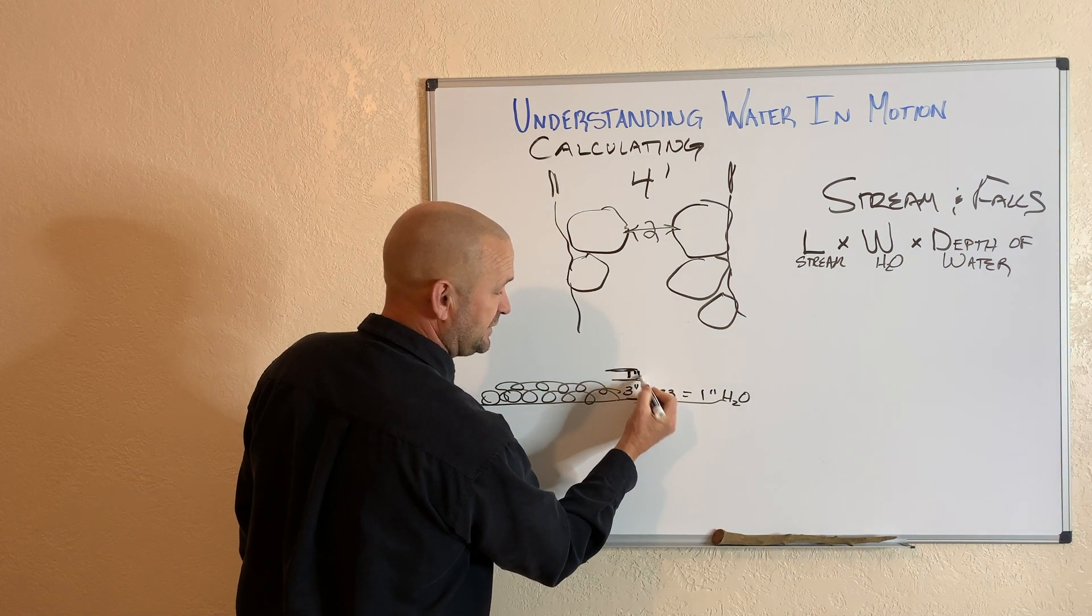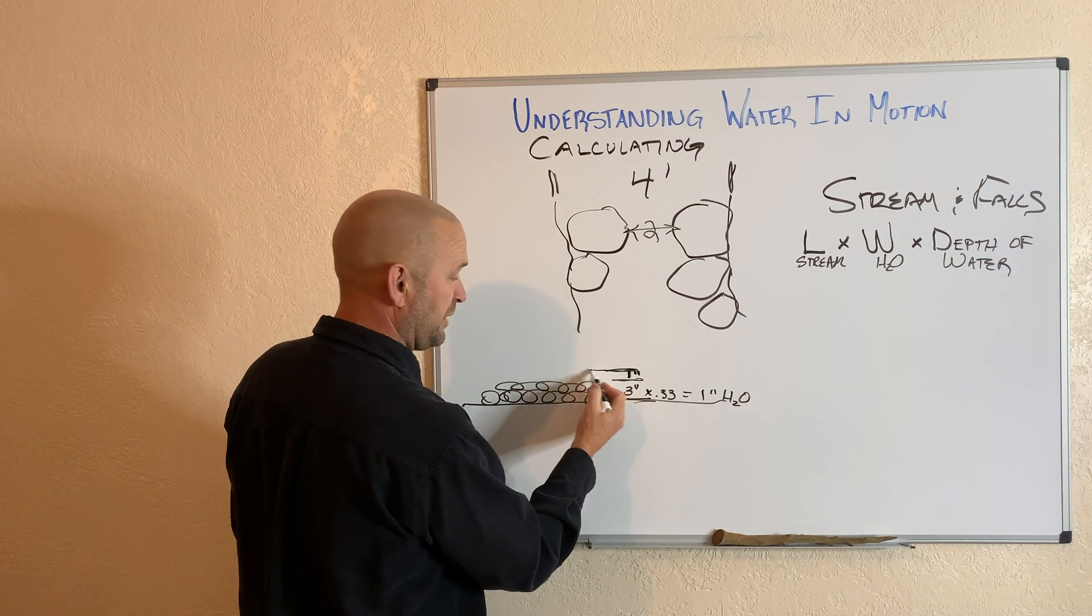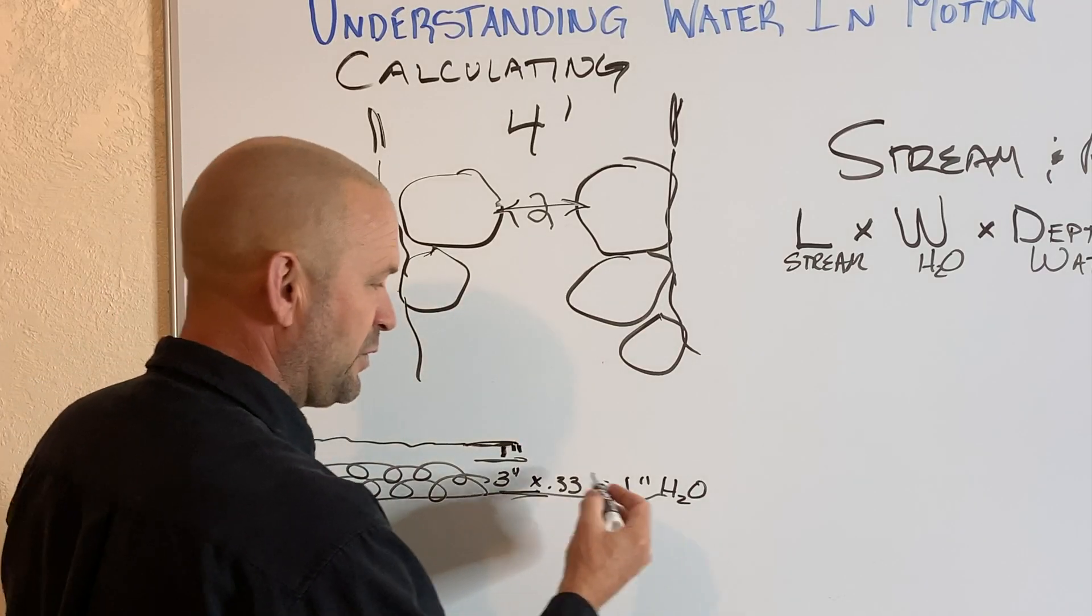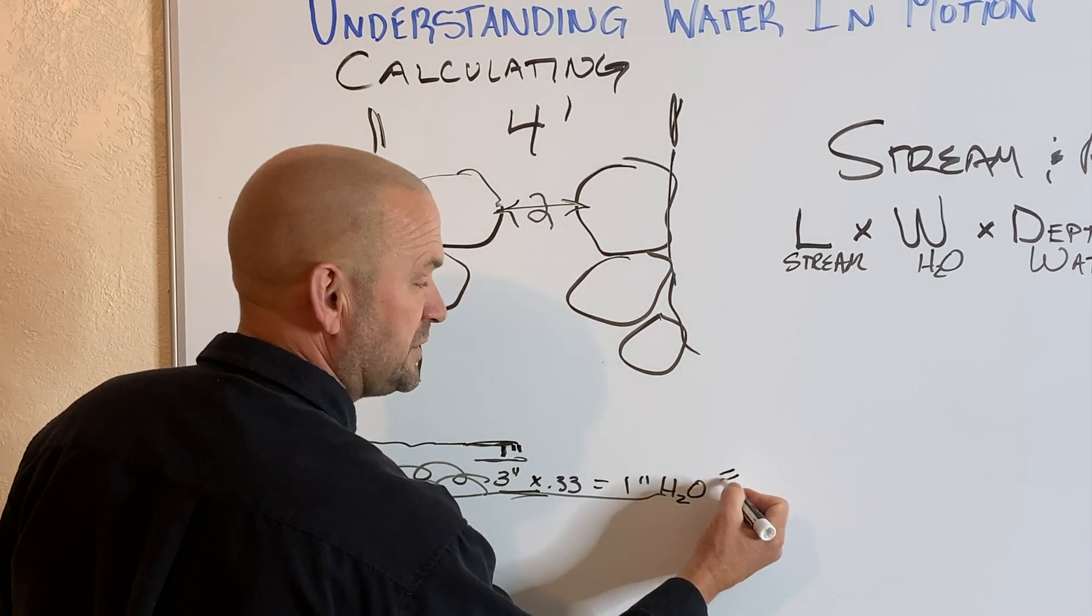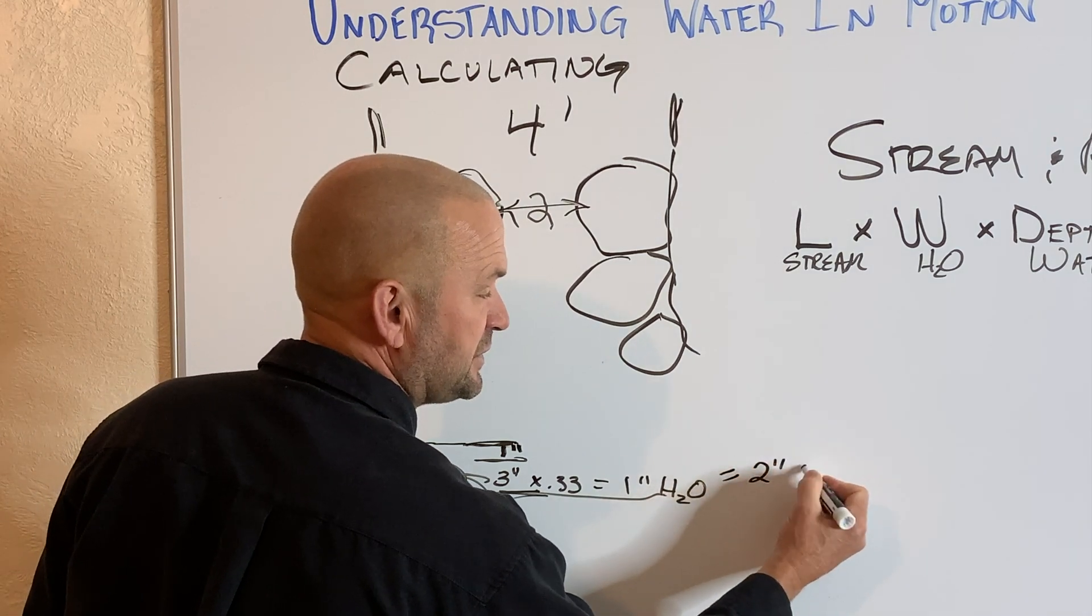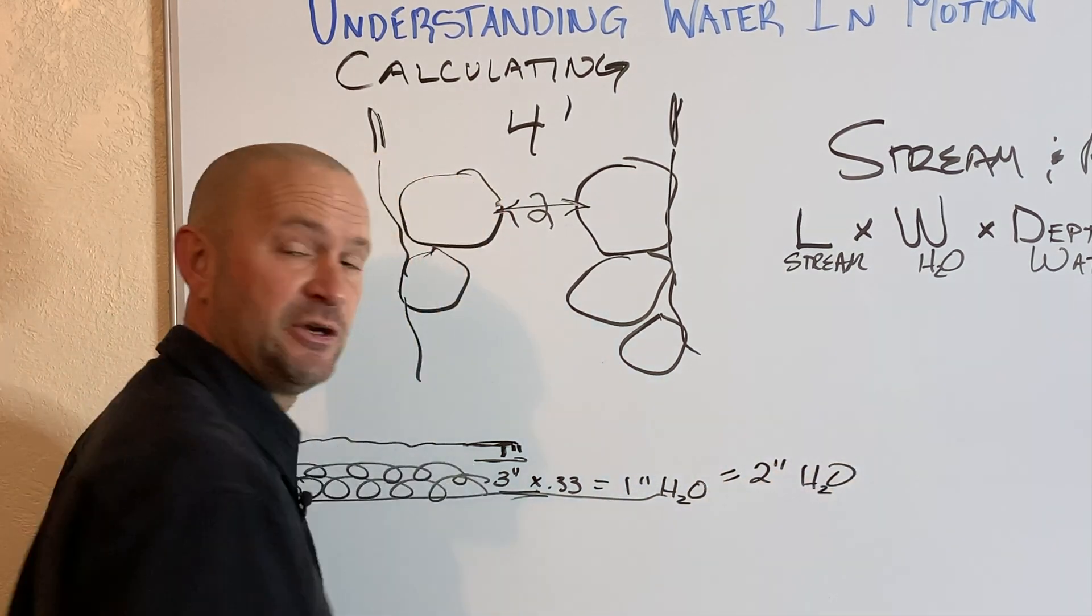So let's just say, for example here, we got one inch of water above the gravel in your stream, and one inch of water in the three inches of gravel down below. So we're going to say you've got two inches of water average in your stream.